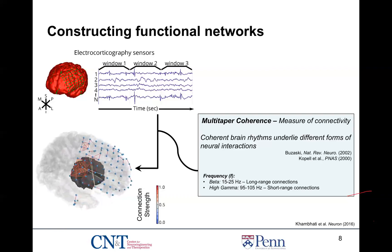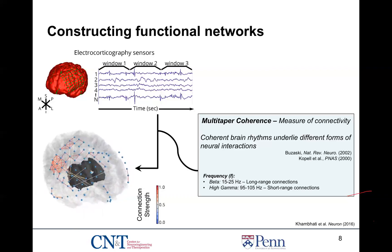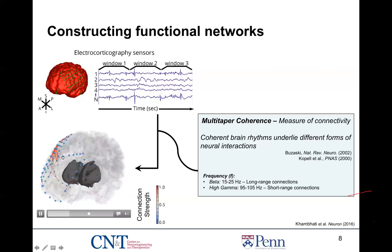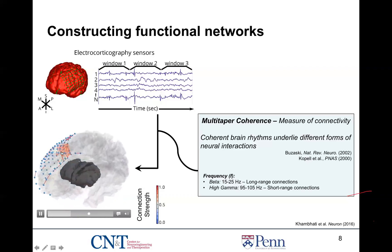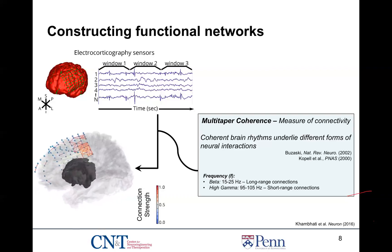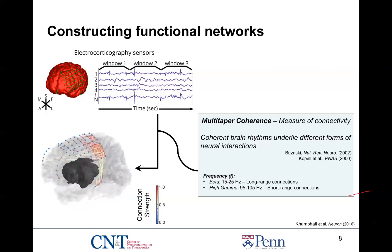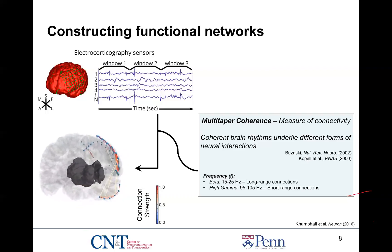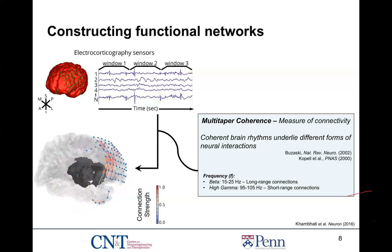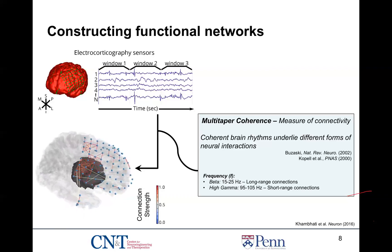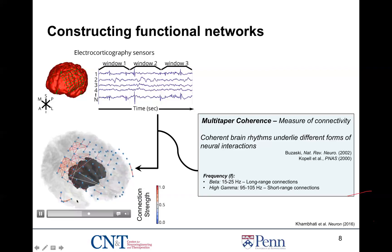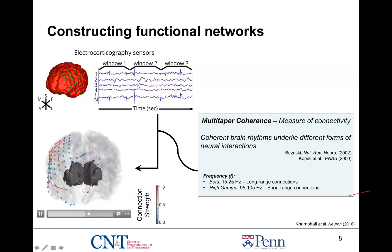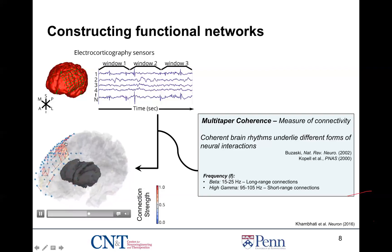What you're seeing here is the network connectivity as it evolves through a seizure. Regions of the brain, or electrodes, that are connected in red exhibit a very high degree of interaction or connectivity, while colors in yellow represent regions that are more weakly connected. This highly connected strong region in red is actually aligned with the area of the seizure onset zone as marked by clinicians. As the seizure begins to evolve, you see projections to subtemporal regions with weaker connections from that rich club.